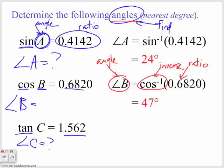If we want to find angle C, it's the inverse of tangent of 1.562, and our angle C is equal to 57 degrees.